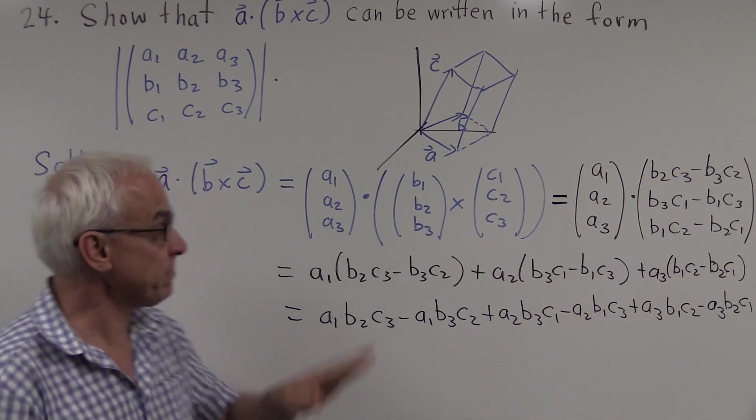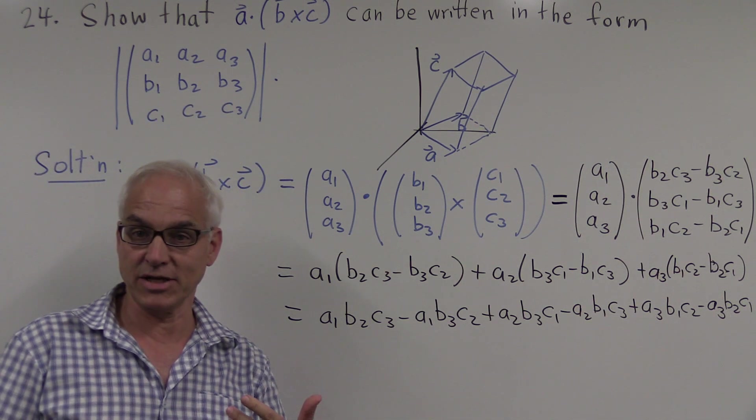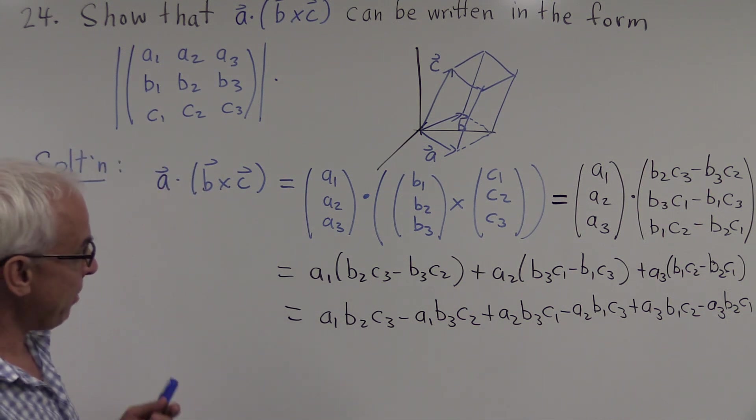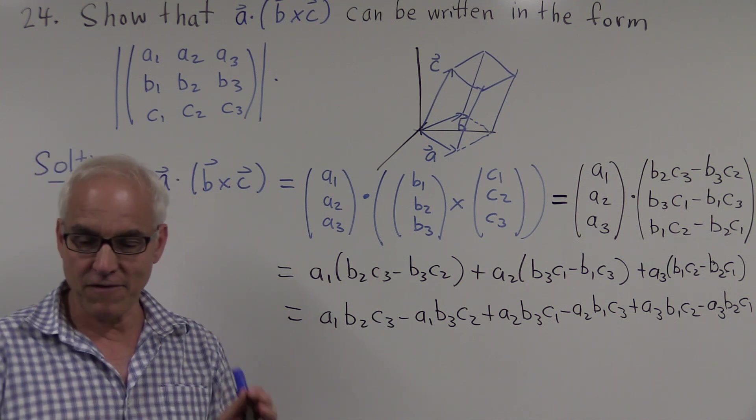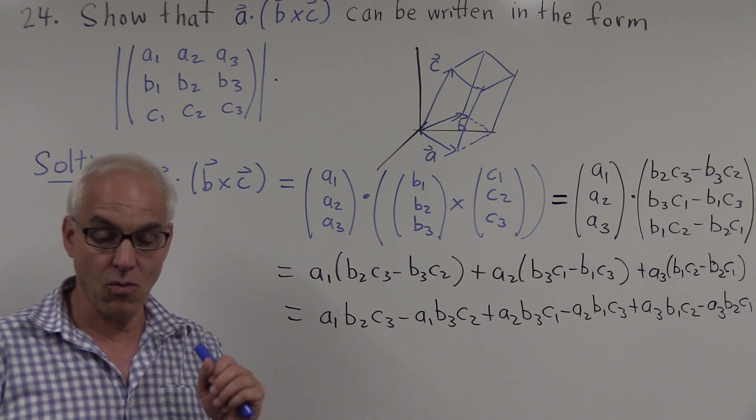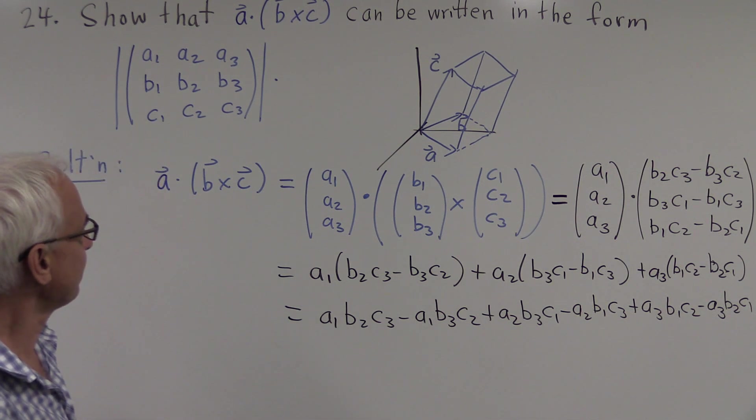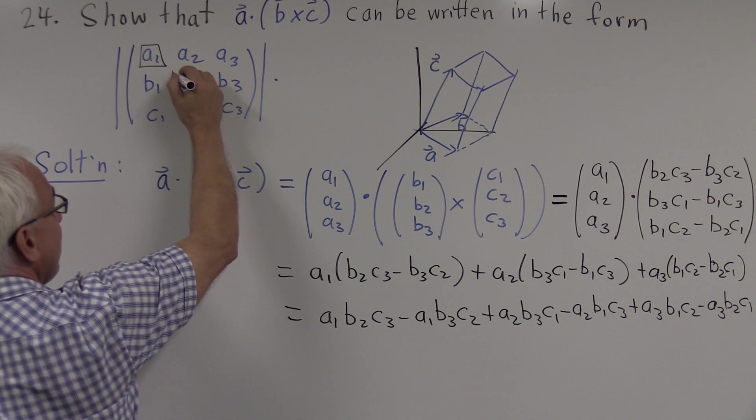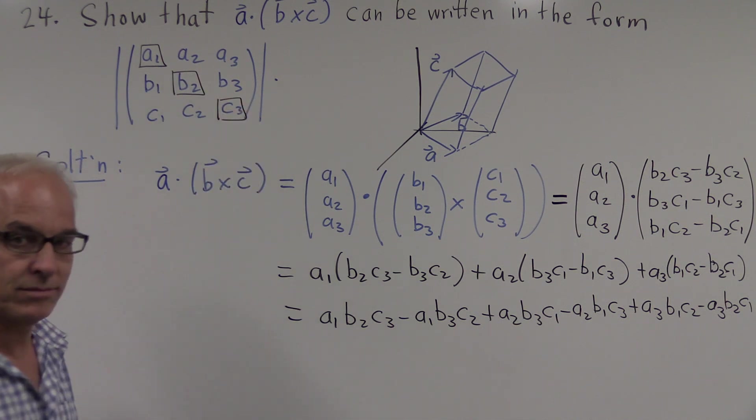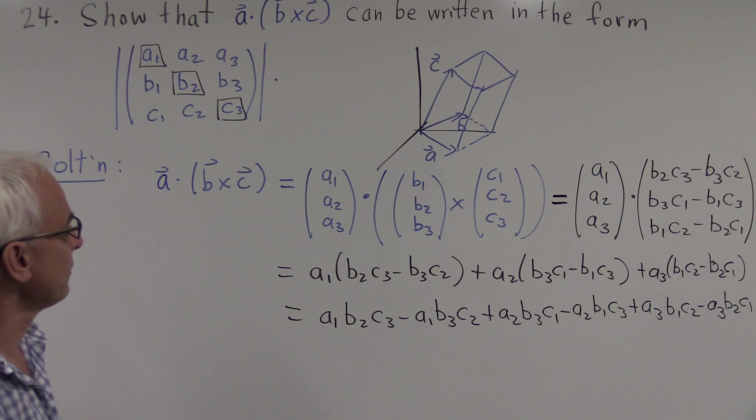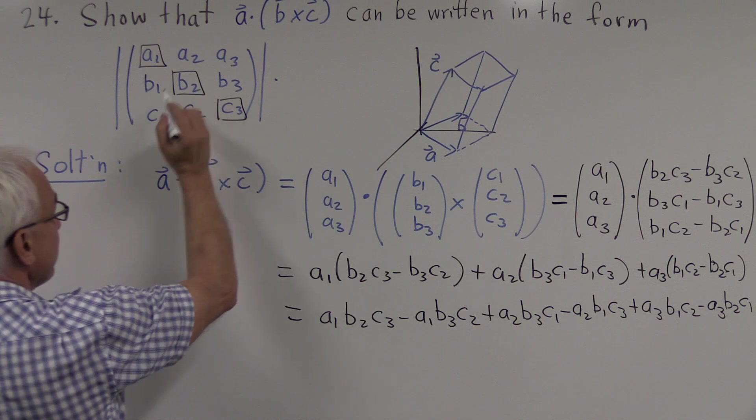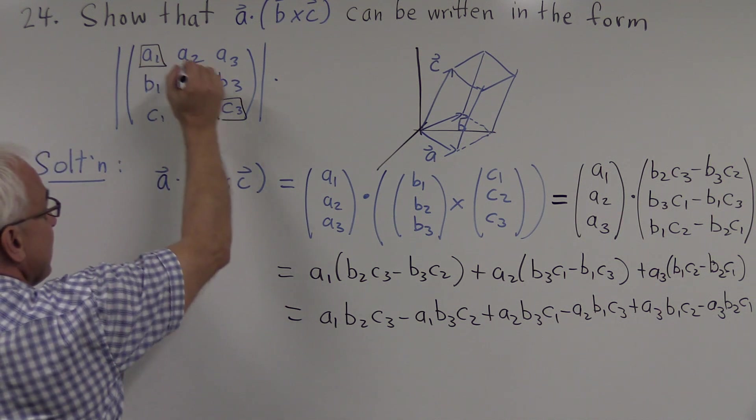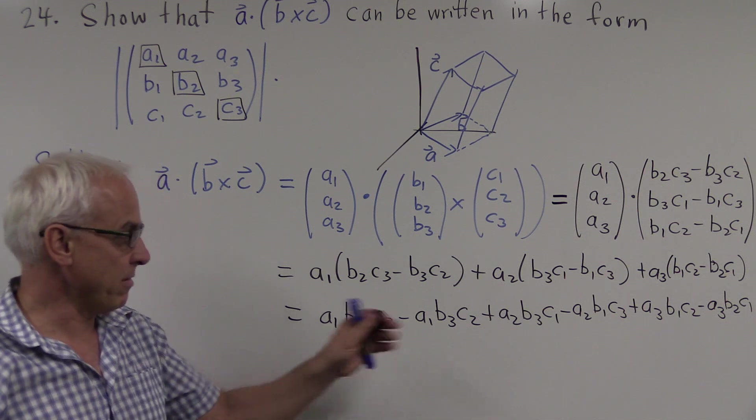And I hope you remember that when you expand a determinant like this of a 3 by 3 matrix, you're also getting six terms. In fact, you're getting the six possible products formed by taking three entries of the matrix, one for each row and each column. So for example, a1 b2 c3 corresponds to the product of this entry, this entry, and this entry. Minus a1 b3 c2. So that's the product of a1 together with b3 and c2. So that's another combination, taking one from each row and column, this time with a minus sign.